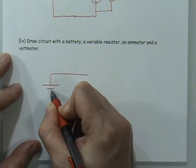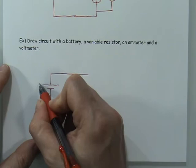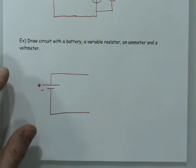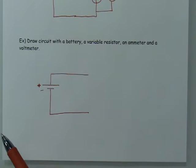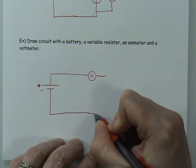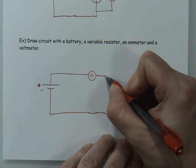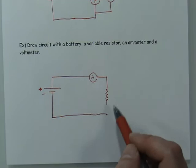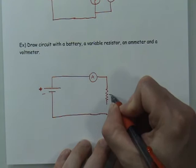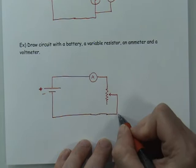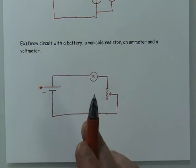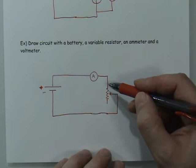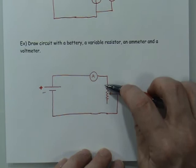I prefer to start by drawing the battery, though it's not a requirement. If you draw multiple long and short lines, just make sure you have equal numbers, since each pair of long and short lines represents the positive and negative ends of the cells. Now let's put the ammeter in, and then the variable resistor. The variable resistor looks like a regular resistor but has three connection points; for our purposes we'll only use two — the middle connector and one on the end.